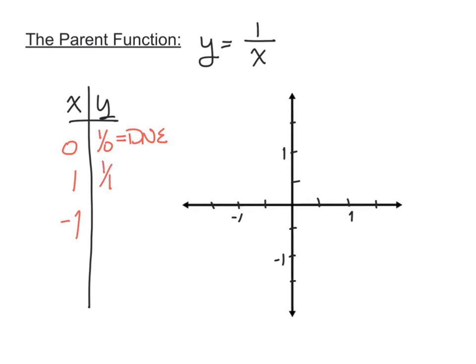At x equals 1, y is going to be 1 over 1, which is 1. So at x equals 1, the y-coordinate is 1. At x equals negative 1, 1 over negative 1 is negative 1. So at negative 1, y is negative 1.